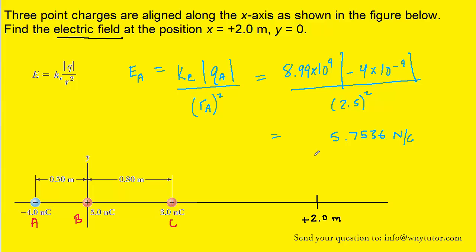Now we have to talk about whether this electric field should stay positive or if we have to call it negative — this is a very important step. We have to be careful because it doesn't really depend on whether the charge itself was negative. A lot of students make the mistake of automatically putting a negative sign in because it's a negative charge. What we have to do is imagine that you were standing at the location where we are trying to calculate the electric field. Electric field lines point towards negative charges, so the field produced by charge A points towards it — meaning it points to the left. If you have a vector pointing in the left direction, the value of that vector has to be negative. So this will take on a negative value.